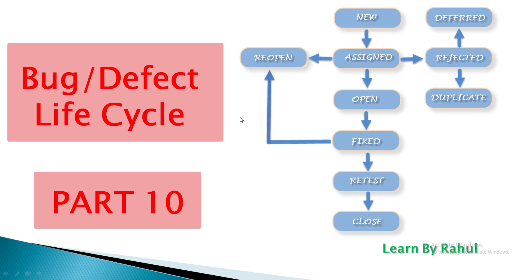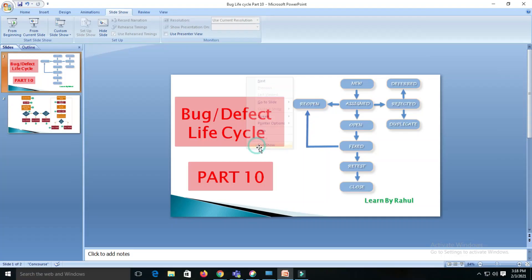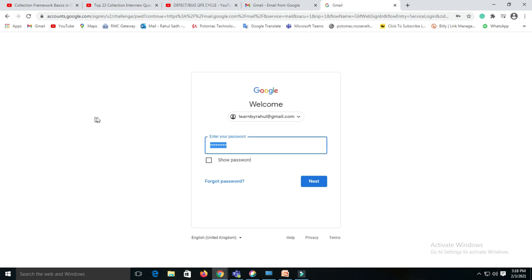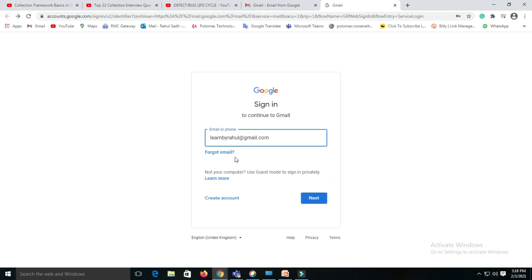Let me take a practical example so you can easily understand what exactly a defect is. Suppose I want to login to the Gmail application. First, we enter the email ID or phone number, then click on the next button.